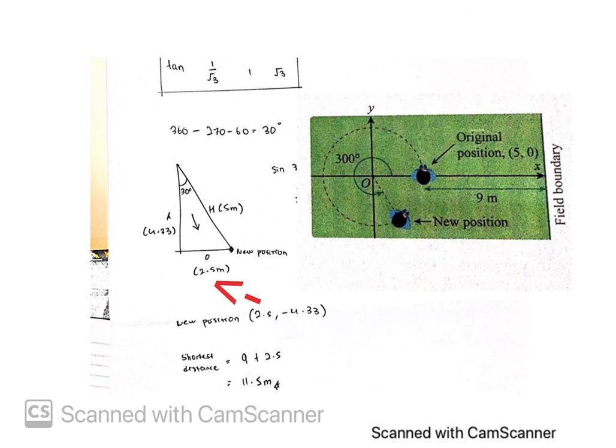Add 2.5 meter with the distance of the original position, which is 9 meter, and the total will be 11.5 meter. Thus, the shortest distance will be 11.5 meter from new position to field boundary.